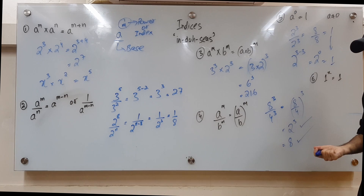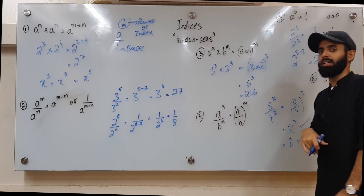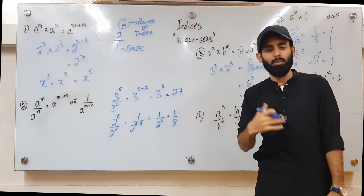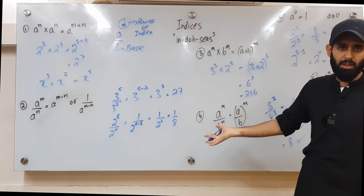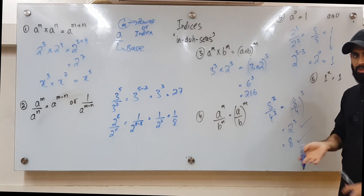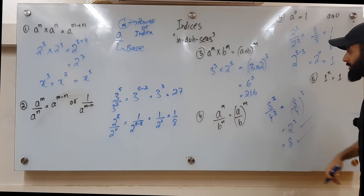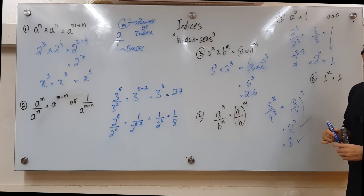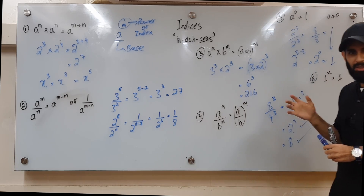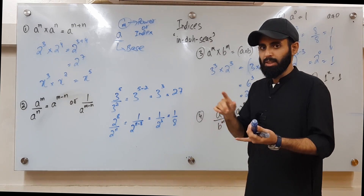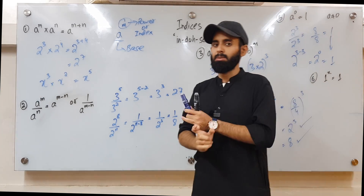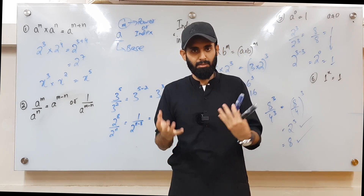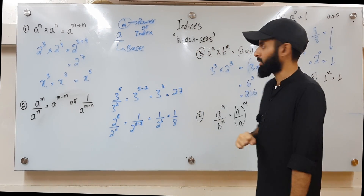Rule number six: if you have 1 as your base, irrespective of whatever power you raise it to — be it 1, 2, 300, negative 1, negative 100 — the answer is always equal to 1. That makes sense because no matter how many times you multiply 1 by itself or divide it by itself, the answer will always be 1.